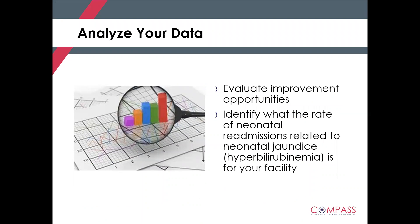We will begin with step one: analyzing your data. This first step will help identify a starting point — is this potentially an area of opportunity that you were not aware of? It can be a challenge at times to know which patients are coming back into the hospital and common themes can sometimes be hard to identify. We recommend you start by looking at all readmissions and breaking them down into categories, including age and diagnoses. Use this data to help identify what your facility's rate of readmissions is specifically for neonatal jaundice.